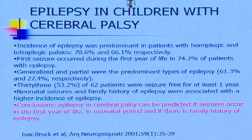Conclusions from the study by Isaac et al.: epilepsy in cerebral palsy can be predicted if seizures occur in the first year of life or in the neonatal period, and if there is a family history of epilepsy. Another study found that the most common type of CP associated with epilepsy was spastic tetraparesis — about 60% of patients had epilepsy, followed by 46% in the hemiparetic type and 44% in the diplegic type.